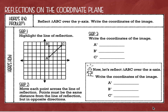Here's the problem. We are going to reflect triangle ABC over the y-axis and we're going to write the coordinates of the image. A reflection is like a mirror image — it's when you take something and you flip it. So sometimes a reflection is referred to as a flip. It's a mirror image. And what we do is we flip it over, or reflect it over, what they call the line of reflection. That's the line that they're telling you to reflect it over.